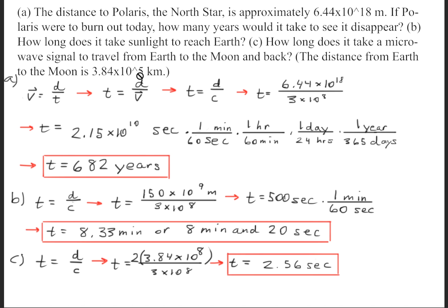And also, be careful that you'll need to change this right here. This is in kilometers. We're going to need it to be in standard units, which would be meters. So we would have 2 times 3.84 times 10 to the 8th meters, and we'll divide that by the speed of light. And we'll get that the time it takes would be 2.56 seconds.